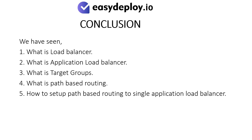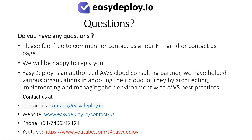Conclusion: We have seen what is load balancer, what is application load balancer, what is target groups, what is path-based routing, and how to set up path-based routing to a single application load balancer. Do you have any questions? Please feel free to comment or contact us at our email ID or contact us page — we will be happy to reply. Easy Deploy is an authorized AWS cloud consulting partner. We have helped various organizations in adopting their cloud journey by architecting, implementing, and managing their environment with AWS best practices.